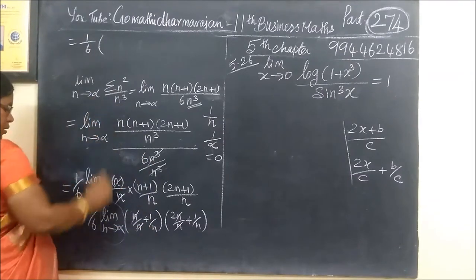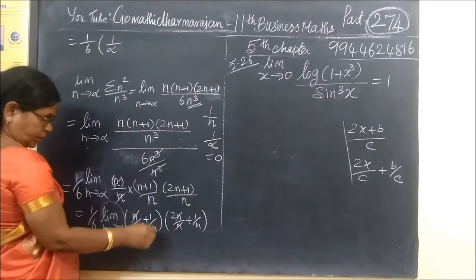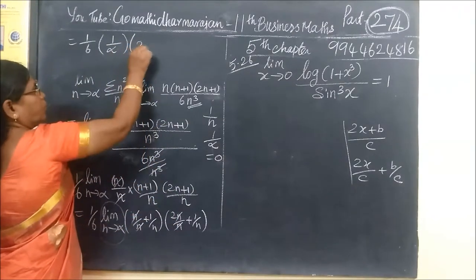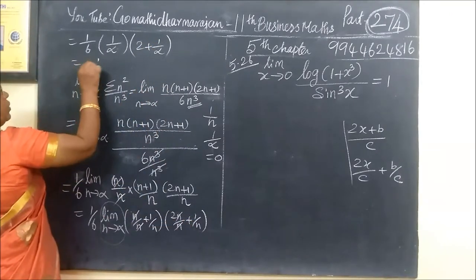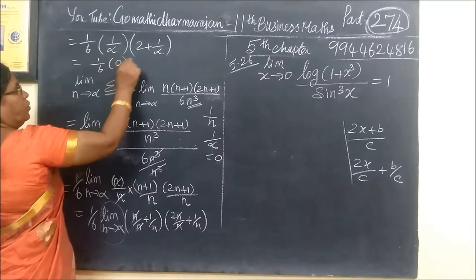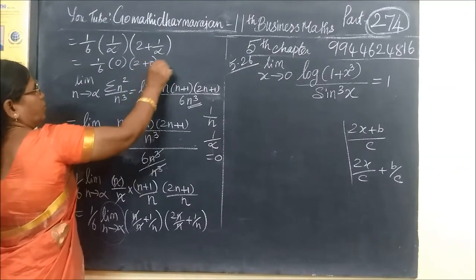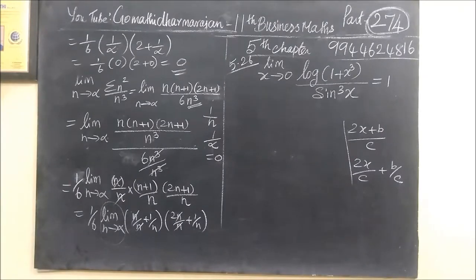1 by 6 times the limit as n tends to infinity of the bracket: 2 plus 1 by infinity. So this is equal to 1 by infinity, which is zero. So the answer for this part is zero... wait.